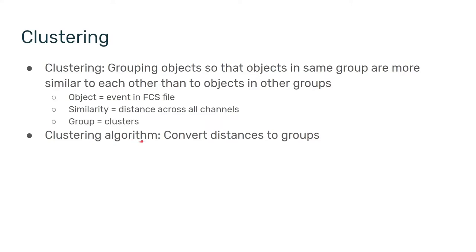A group is one of the clusters we've been talking about. So a clustering algorithm converts distances into groups. It's one of the ways you can take raw data and make it into features that have some biological sense and context, so you can think and talk about the data in a more meaningful way.